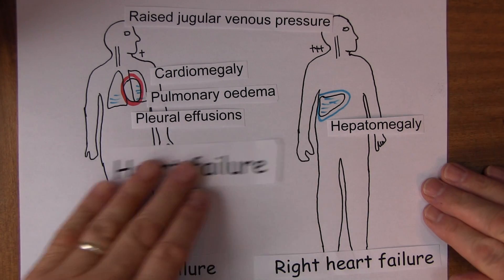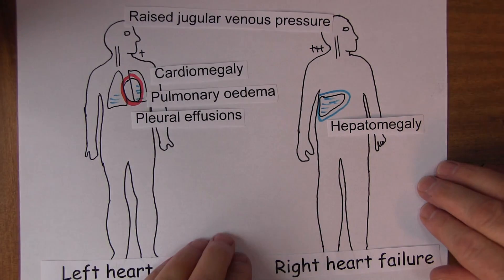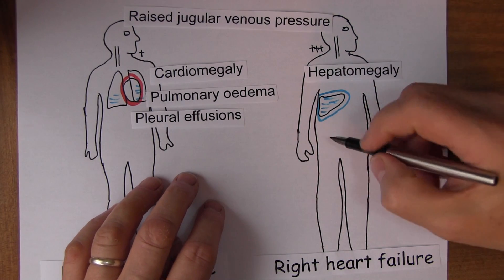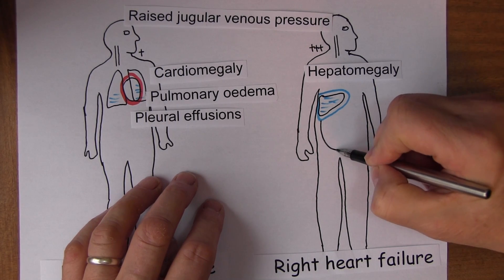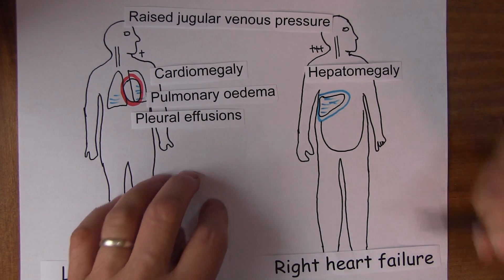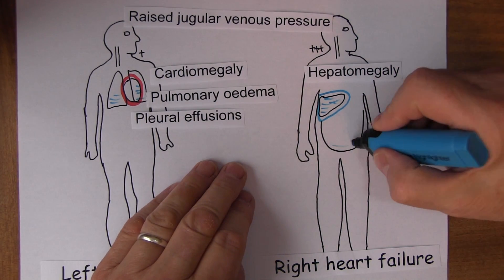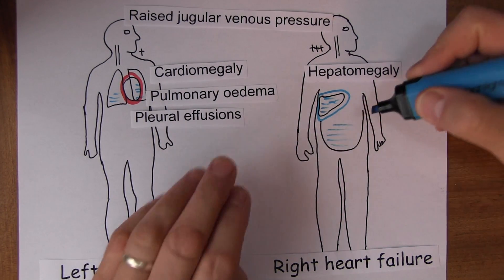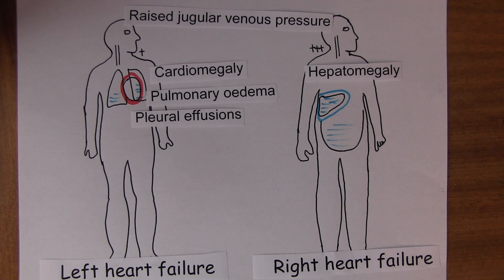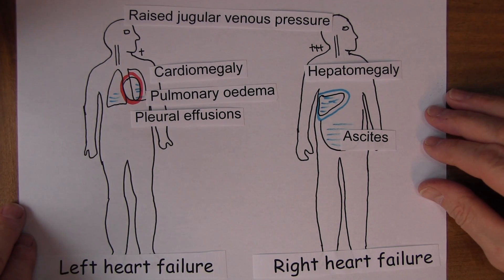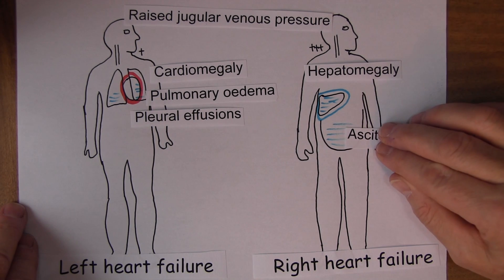Also in right heart failure, because of the backlog of pressure in the systemic veins, fluid can accumulate in the peritoneal sac due to venous back pressure. If fluid accumulates in the peritoneal sac we call that ascites — accumulation of fluid in the peritoneal sac in the abdomen.